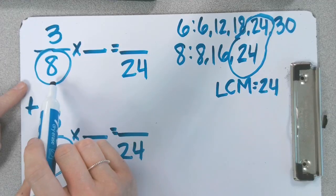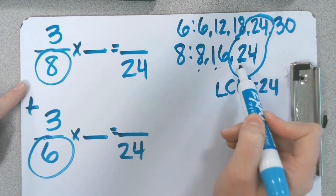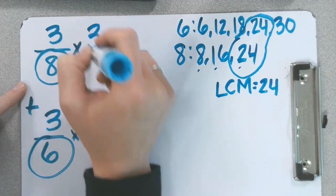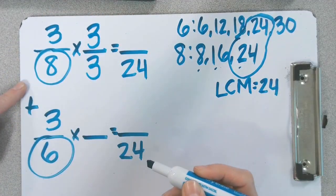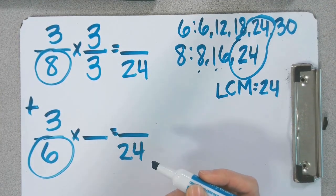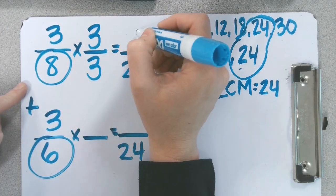What can I multiply 8 by to get 24? If you don't know, go back to where you skip counted: 1, 2, 3. So we're going to multiply 3 eighths by 3 thirds. 3 thirds is equivalent to 1. 8 times 3 is 24. 3 times 3 is 9.